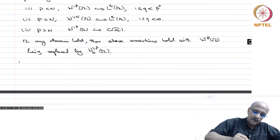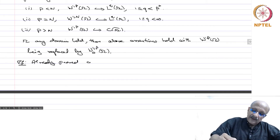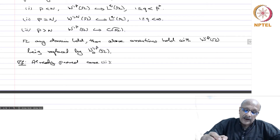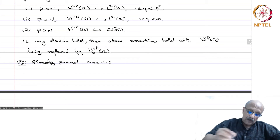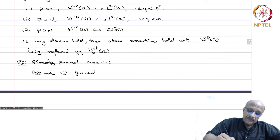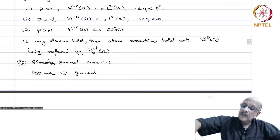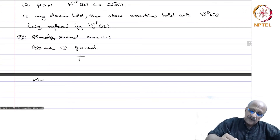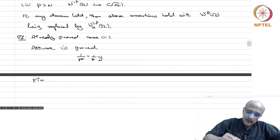Proof: Case 3 (p > n) is already proved — W^{1,p}(omega) embeds into the space of continuous functions, so the unit ball consists of bounded, uniformly continuous functions, giving compactness by the Ascoli-Arzelà theorem. For the case p = n, recall that 1/p* = 1/p − 1/n implies p* → ∞ as p → n. For any q < ∞, choose epsilon small so that (n − epsilon)* > q. Then W^{1,n}(omega) embeds continuously into W^{1,n−epsilon}(omega) (finite measure domain), and by case 1 this embeds compactly into L^q(omega).